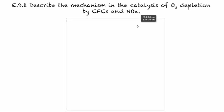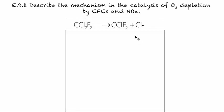So this is where we'll explain it. Starting with CFCs, we have a carbon combined with two chlorines and two fluorines. In the presence of light, a chlorine free radical is created.